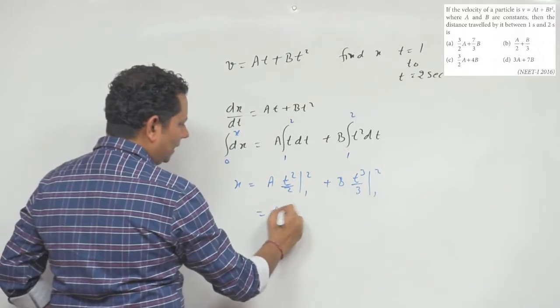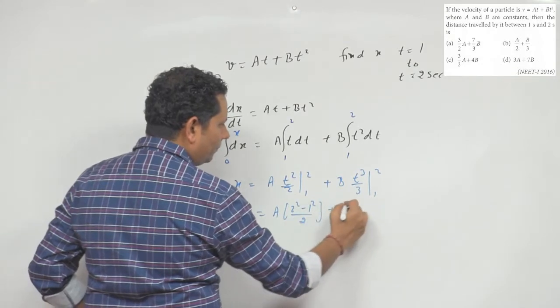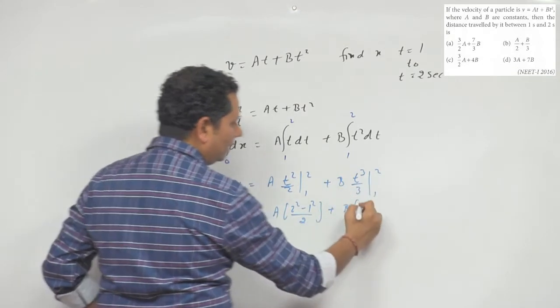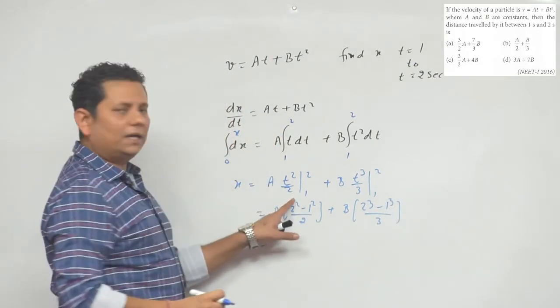This gives A multiplied by 2 square minus 1 square divided by 2, plus B times 2 cube minus 1 cube divided by 3. So the value becomes 2 square is 4 minus 1 is 3, so 3 by 2 A.